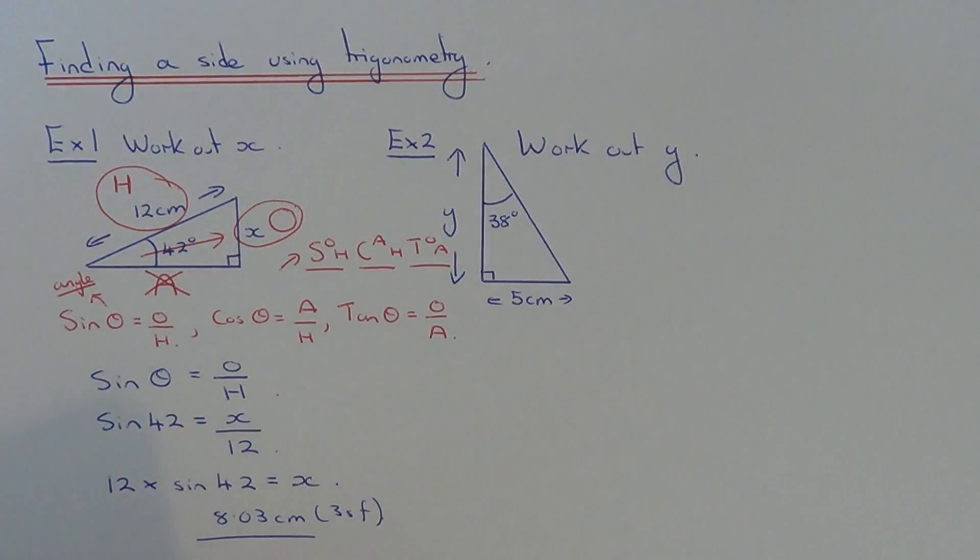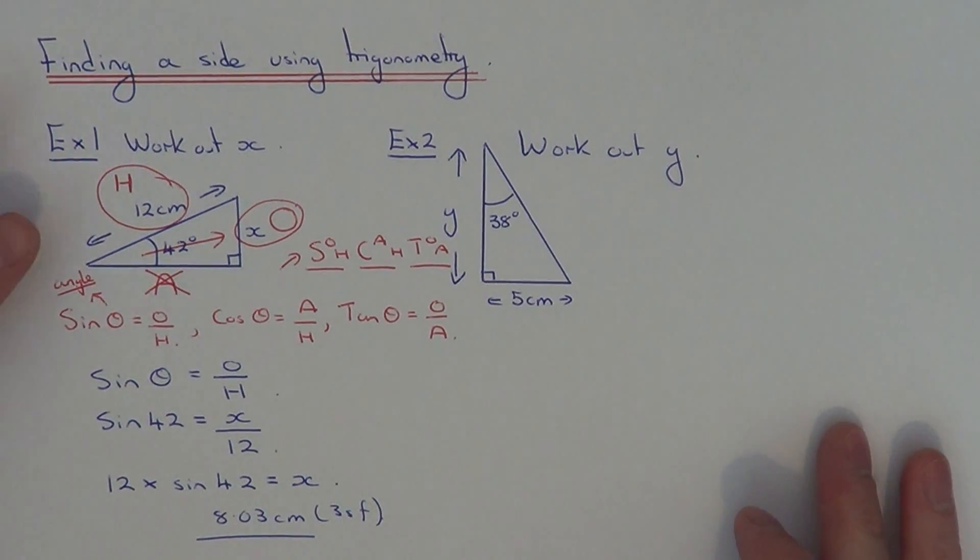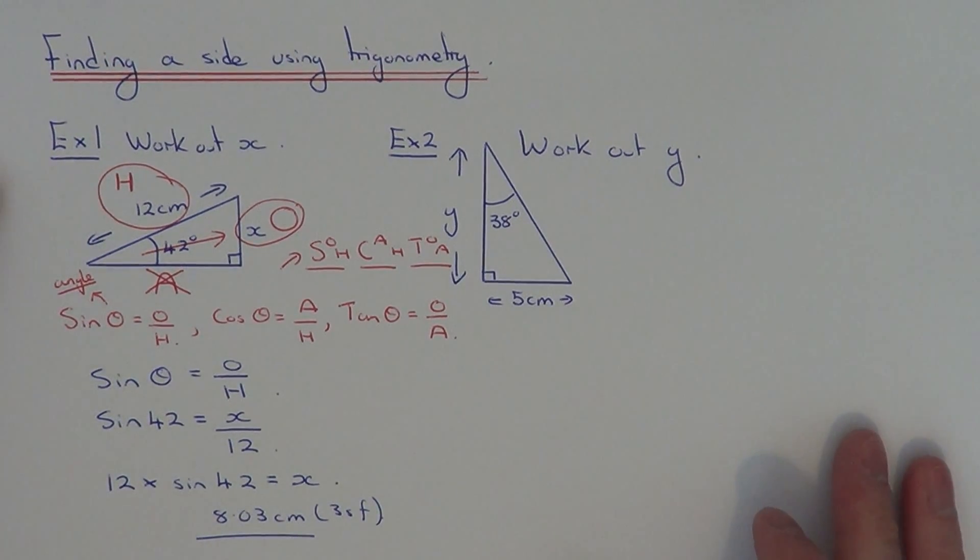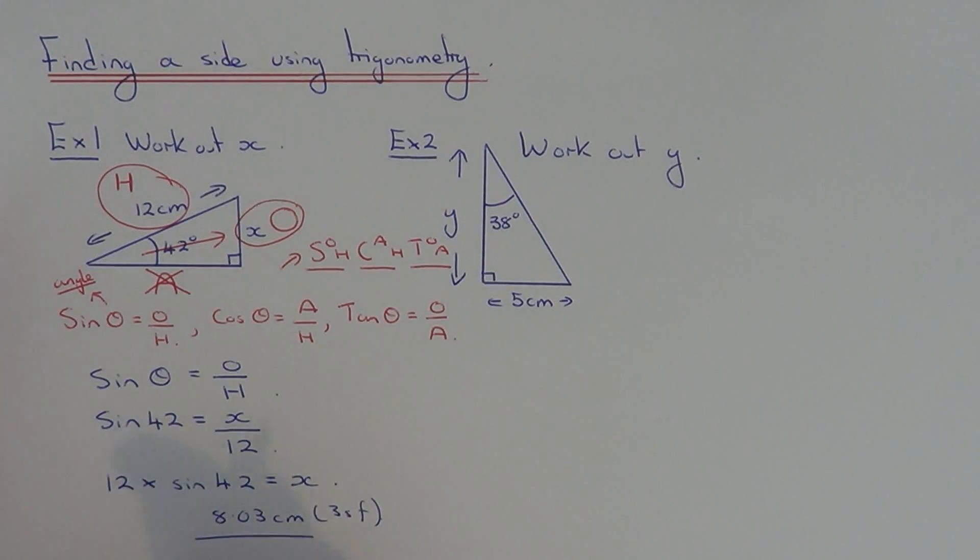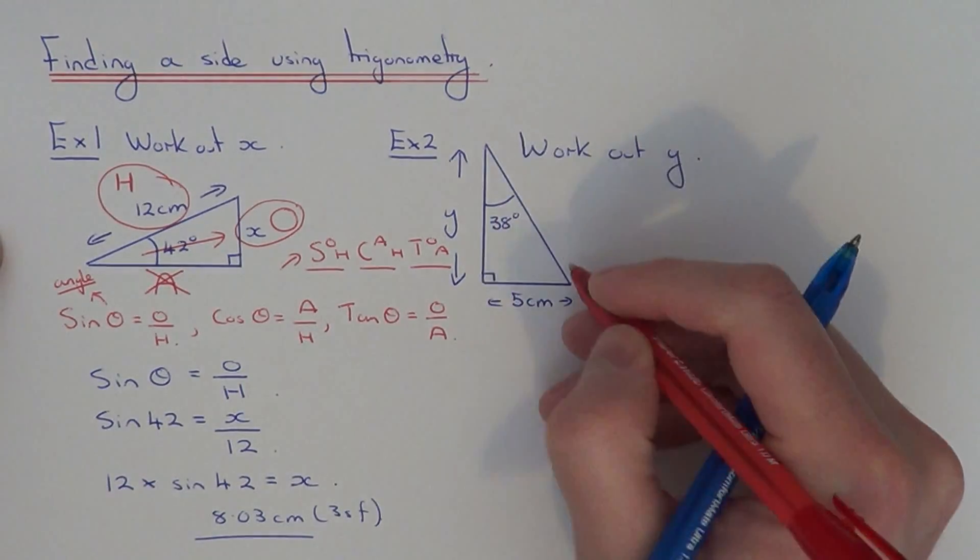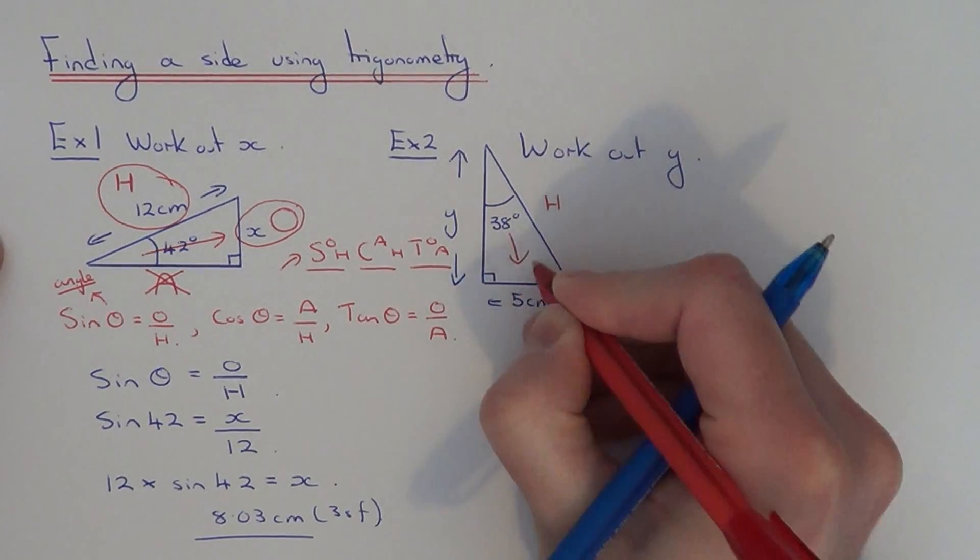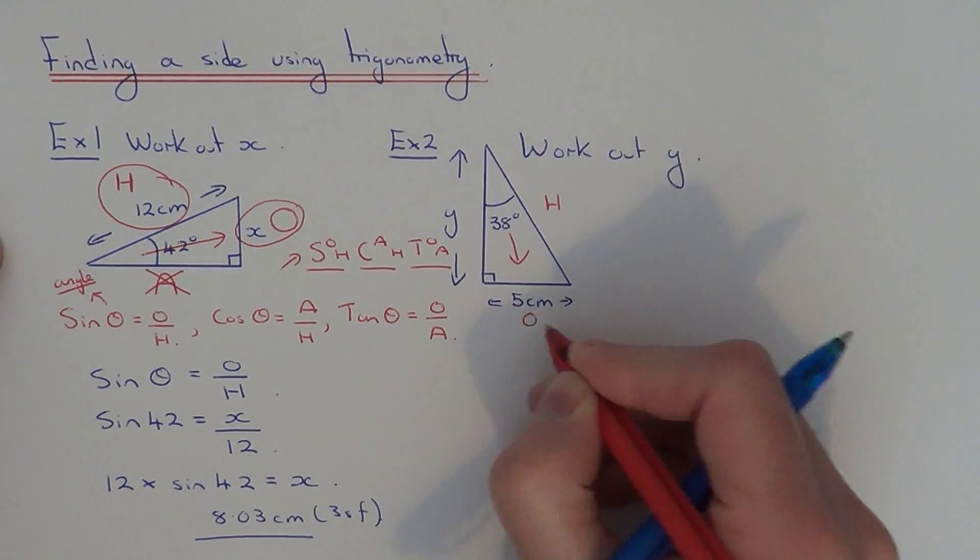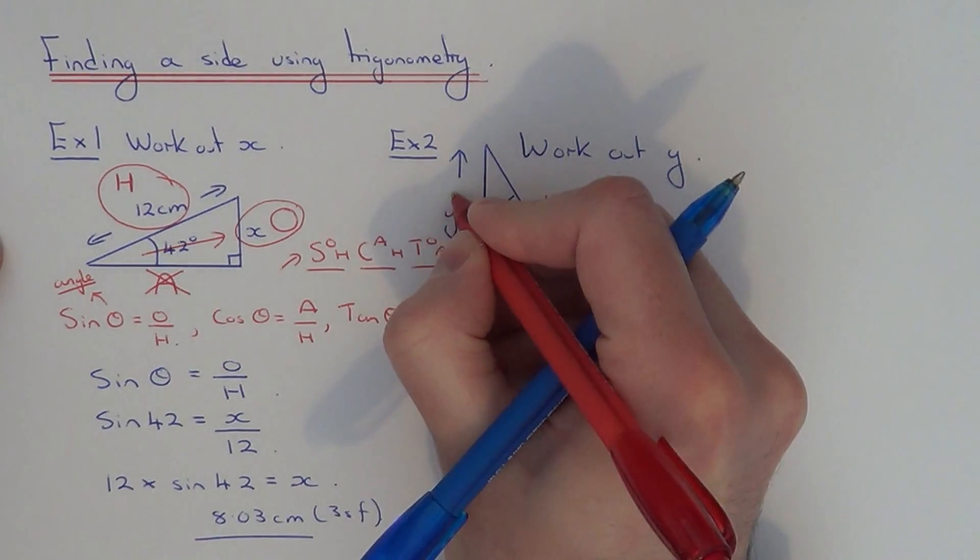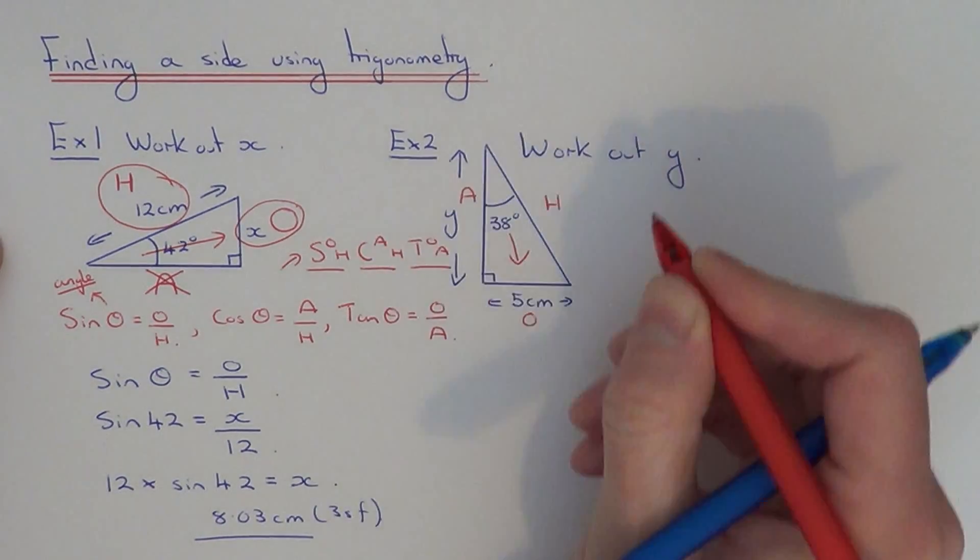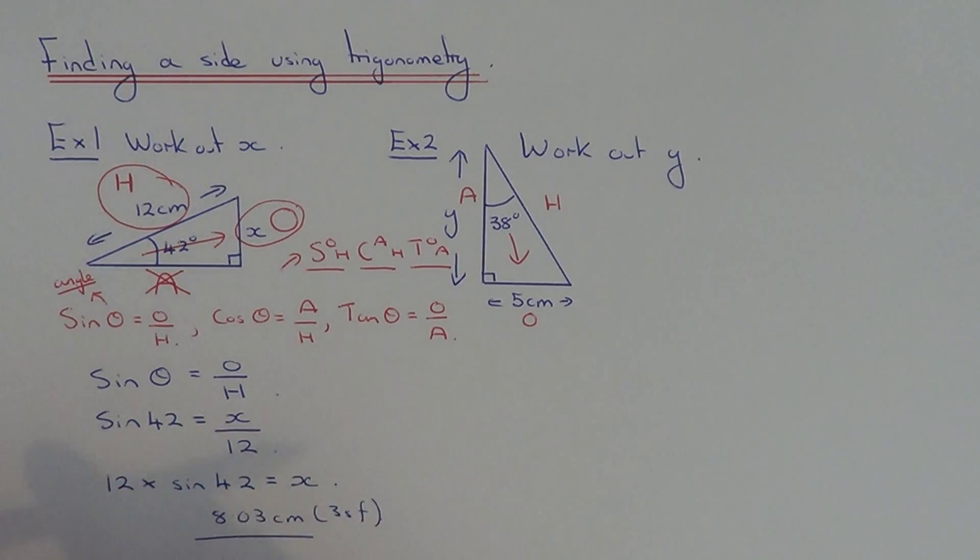So let's move onto example two. A little bit different this second example as you'll see later on. The first thing we have to do is label up the triangle. The longest side of the right angle triangle is the hypotenuse. The side opposite the given angle is the opposite side. And the third side is the adjacent side. So the next thing is to decide which one of our three trig formulas to use.